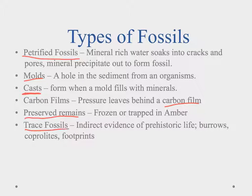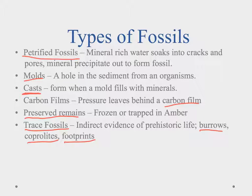Finally, we have trace fossils. Trace fossils are indirect evidence — a trace the animal left behind. Things like a burrow where a worm went through the sediment and left a hole, footprints, and coprolites, which is fossilized dung. These can give us clues as to how animals lived, but don't tell us much about the animal itself — just providing trace evidence.